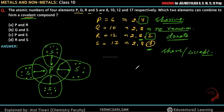If P and S are sharing, then our right answer is option C: P and S. I hope you understood the question. That's all, thank you.